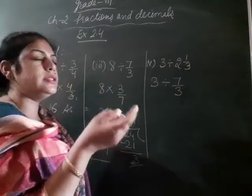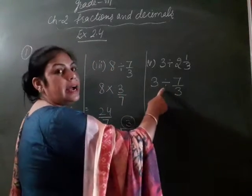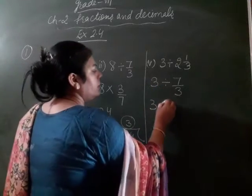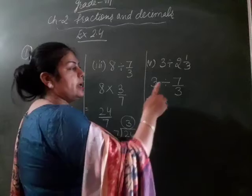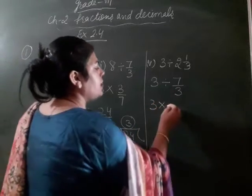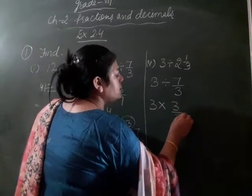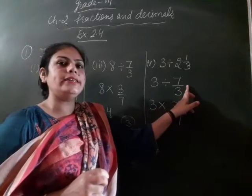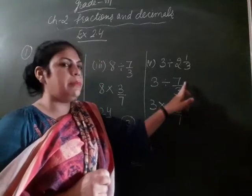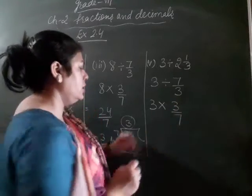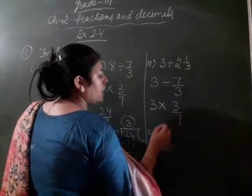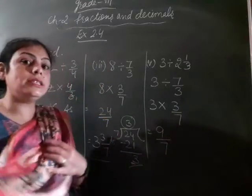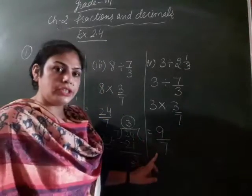Then our next step is you have to write product sign at the place of division. Divide ke jaga, multiply. Then 7 by 3 can be written as 3 by 7. Jeb hum ni multiply lagaya divide ke jaga. Then write its reciprocal. 7 by 3 ka reciprocal 3 by 7. Then you multiply. 3 threes are 9 over 7. This is also improper fraction.